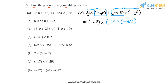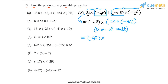The property we have used to rewrite this expression is distributivity of multiplication over addition. Now this is easy to calculate: 26 plus minus 36 equals minus 10, so we get minus 48 into minus 10, which equals 480. It is positive because both integers are negative. So in part A, the value of the expression is 480.